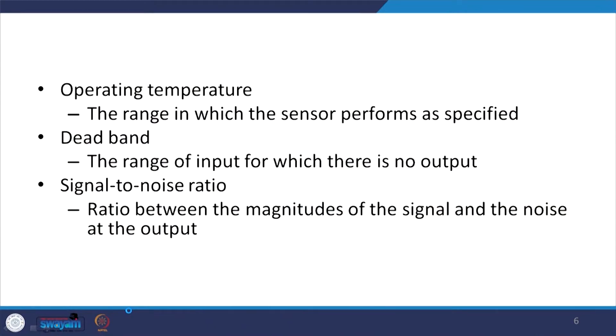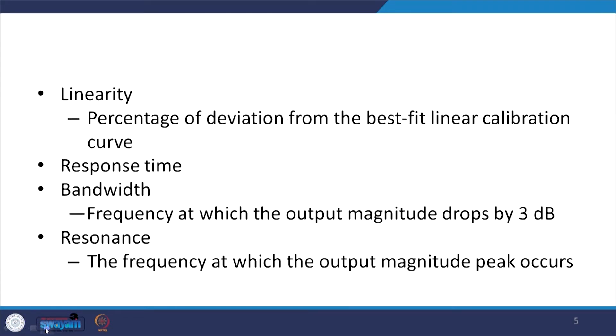Additional selection factors include the operating range — the range in which the sensor performs as specified — and the dead band, which is the range of input for which there is no output. Some of these definitions we have already seen in a previous lecture. Also important is the signal to noise ratio, that is the ratio between the magnitude of the signal and the noise at the output. Based on these requirements we can select a particular type of sensor.